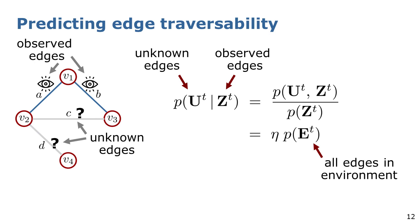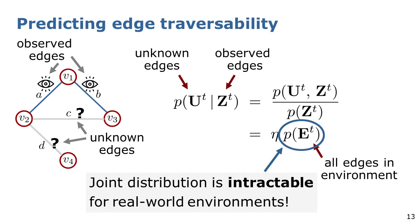To predict the edge traversability, we aim at estimating the probability of the unobserved edges to be traversable, conditioned on the partial observation of the current environment configuration. To estimate this probability, it is essential to know the joint distribution over all edges in the environment. However, representing this distribution requires, in general, exponential space in the number of edges. Therefore, it becomes quickly intractable for real-world environments.